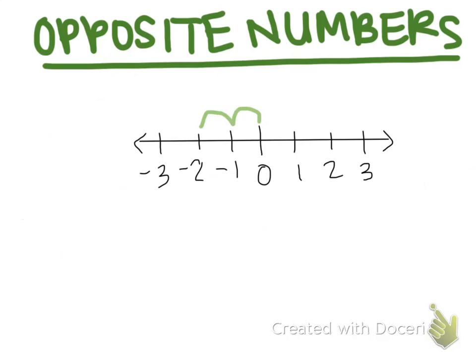When I move to the left, which means I'm going to smaller numbers, I went two spaces. That made me land on negative two, which is a negative integer.